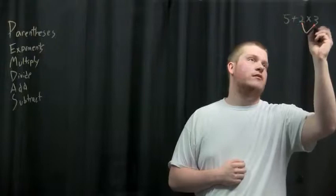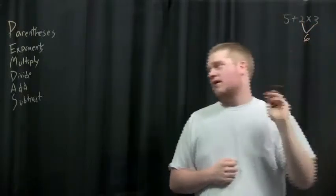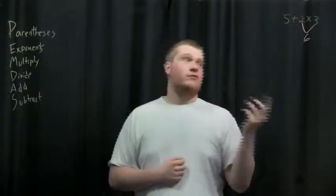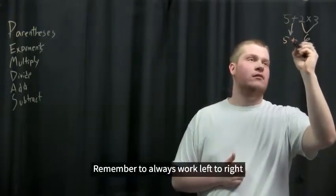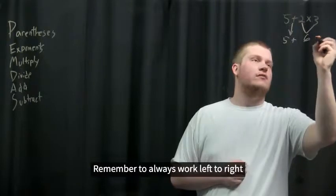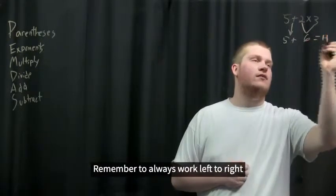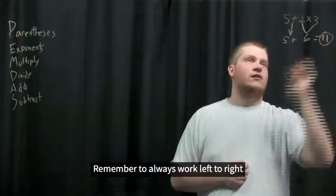So now what you'll do is multiply the 2 and the 3 to get 6. Then after that you look, is there division? There's no division. Is there adding? There is adding. So what do you do? You bring this 5 and the plus sign down, you do 5 + 6, and then you get 11 as your final answer.